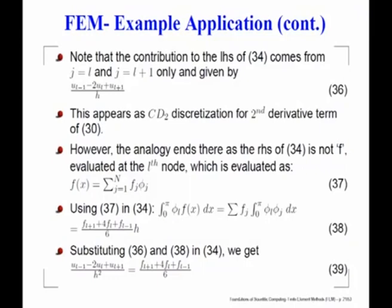Multiplying by phi_L and integrating over all possible j's, you will see that only the L-th node and neighbors L-1 and L+1 will contribute, and that contribution is given. In the end, this is the discrete equation you have. If you were doing a finite difference calculation with the second-order central scheme, the left-hand side would be the same, but on the right-hand side you would have gotten simply f of L. In this Bubnov-Galerkin approach, you get a weighted average of f on the right-hand side.